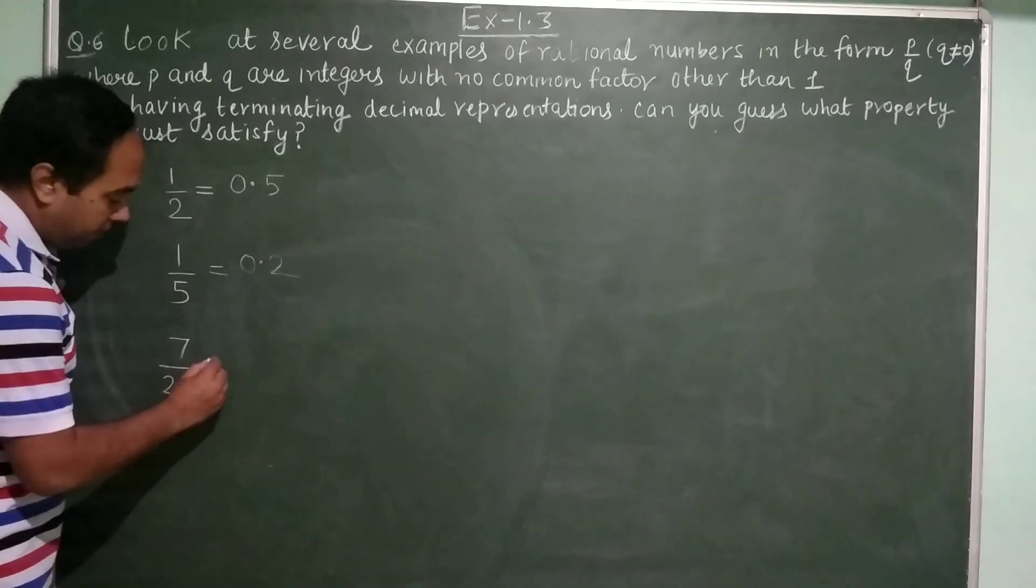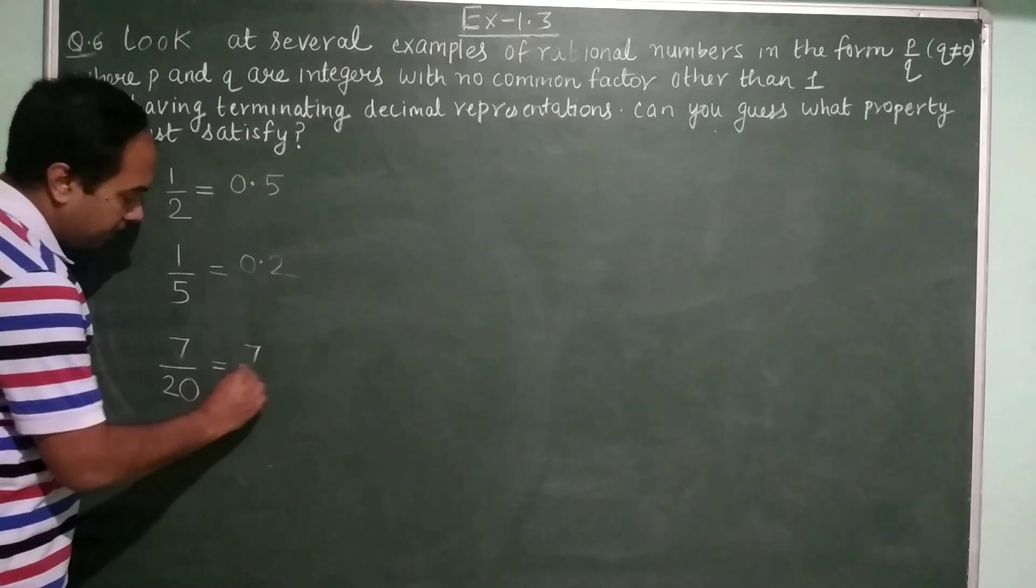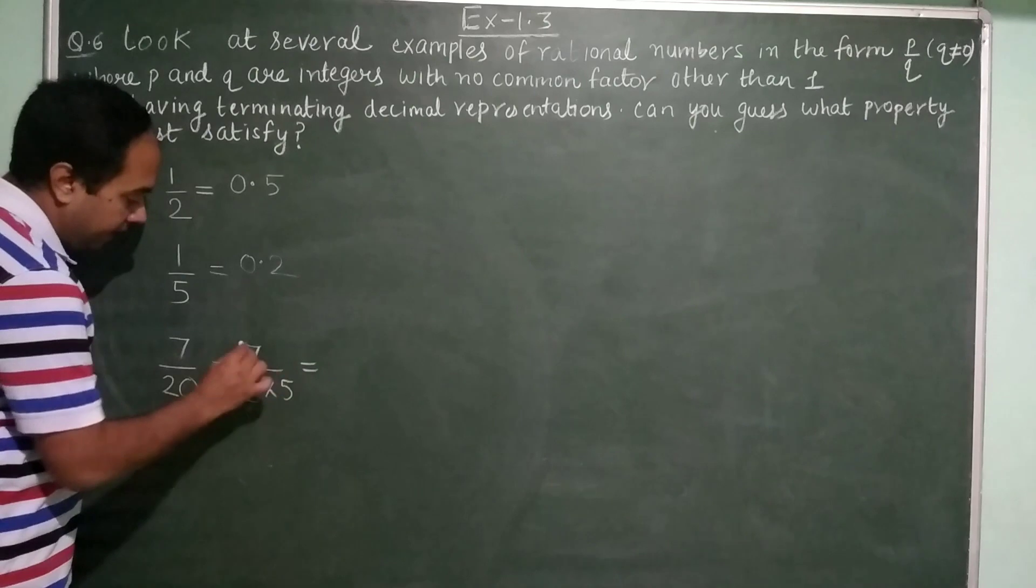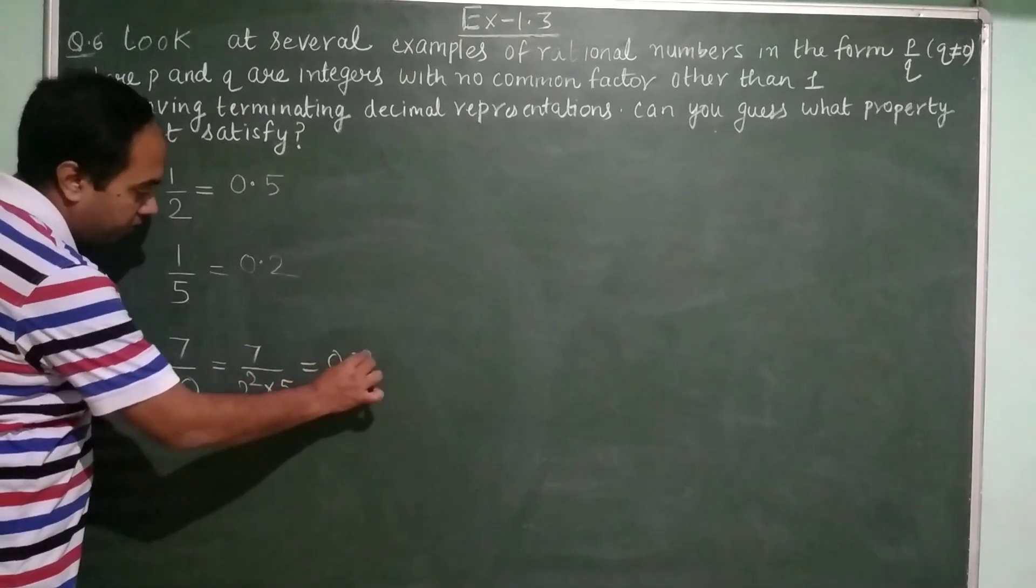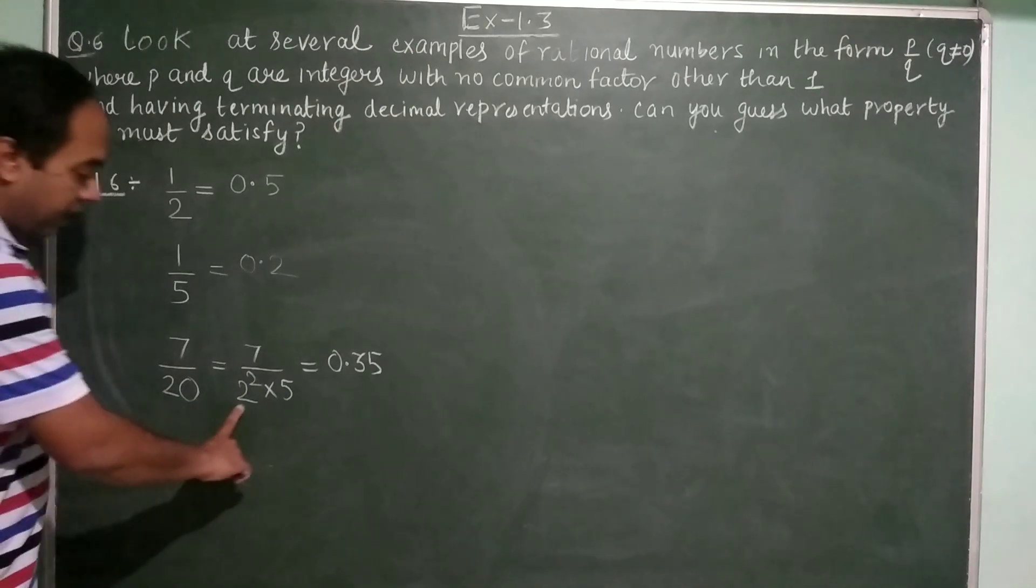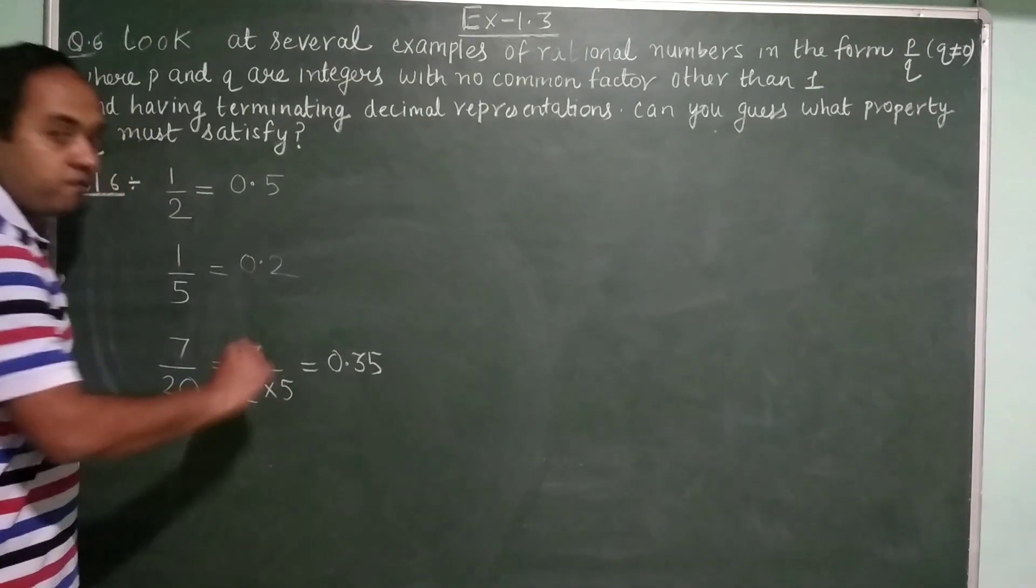Now 7 upon 20, this thing can also be written as 2 power 2 into 5. And when you divide it, you will get 0.35. So over here, the denominator contains prime factor 2 as well as prime factor 5.